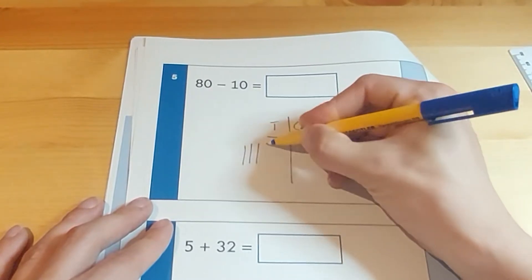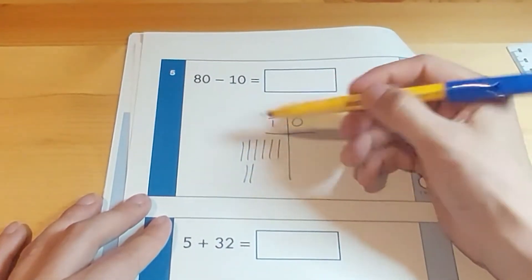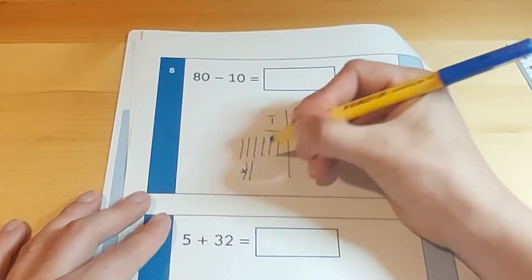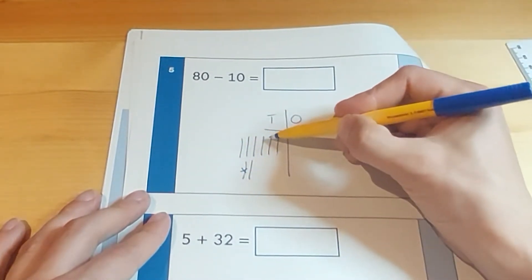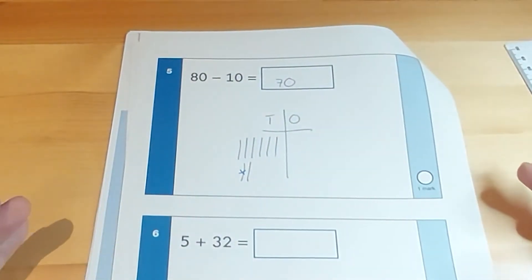But again if they can't do that you might want them to draw the grid out. You do 10, 20, 30, 40, 50, 60, 70, 80 and then we're taking away one 10 so we'll cross that out, leaving 10, 20, 30, 40, 50, 60, 70.